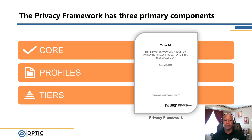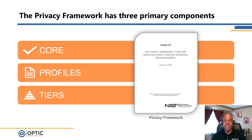As a quick recap, the Privacy Framework has three primary components: its core, profile, and tiers. The core is a set of privacy protection outcomes and activities. Profiles focus on either current activities or target state activities, depending on the type of profile developed for the organization. Tiers focus on the sufficiency of the processes or resources to really meet the privacy risks as defined by the organization, and these will be tailored by the risk-based strategy of the organization.